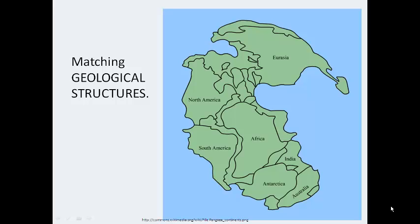One of the things Wegener noticed was matching geological structures in continents that were no longer nearby. Here we see an image of Pangaea showing all the major continents. Wegener noticed that the present-day continental shelves line up with one another — for example, the shelf of North America and that of Africa line up, and the continental shelves of South America and Africa line up nearly perfectly.